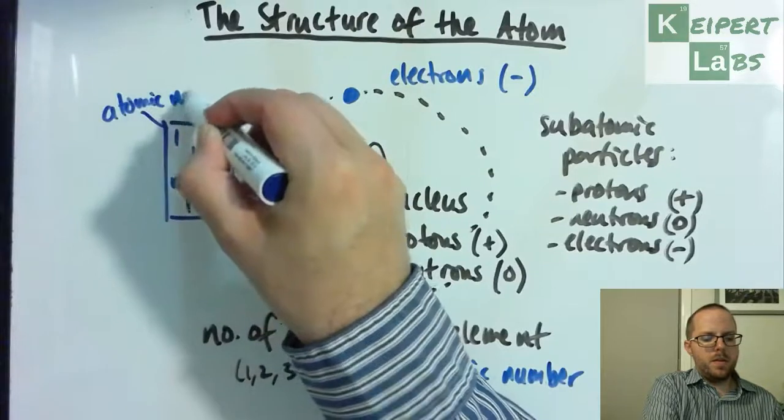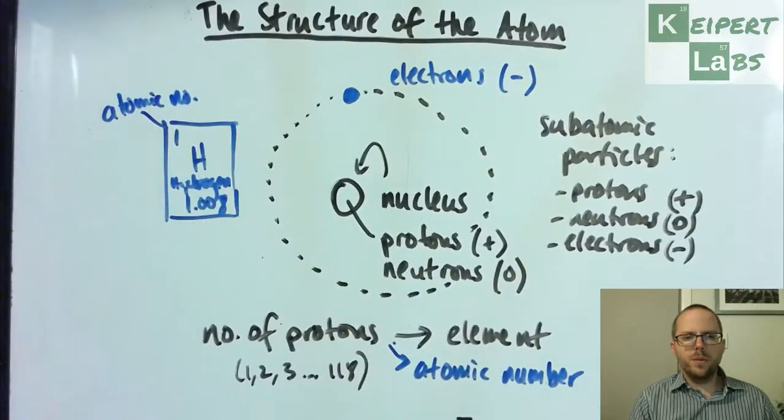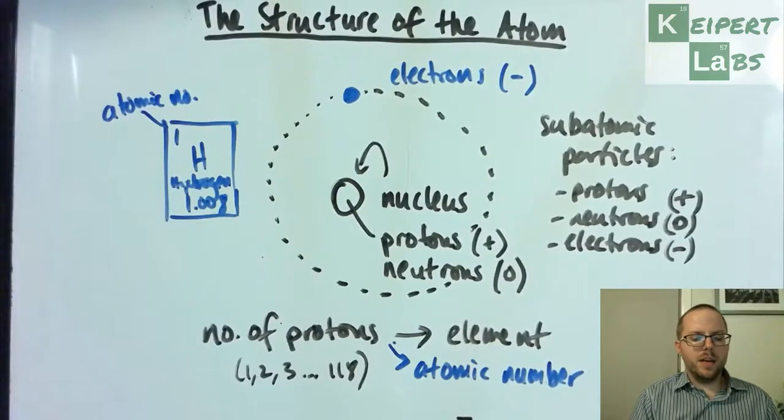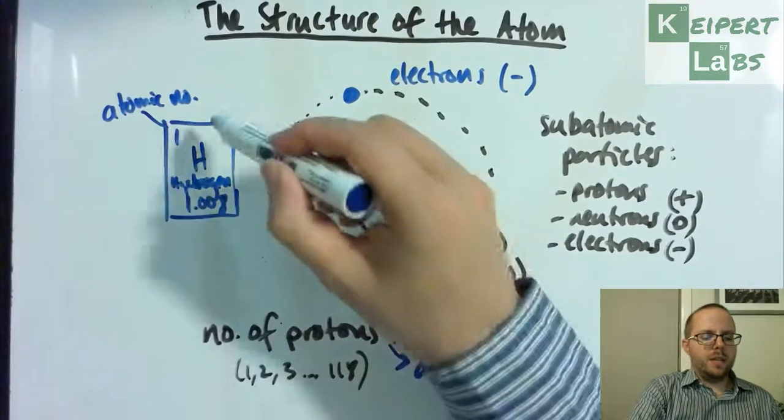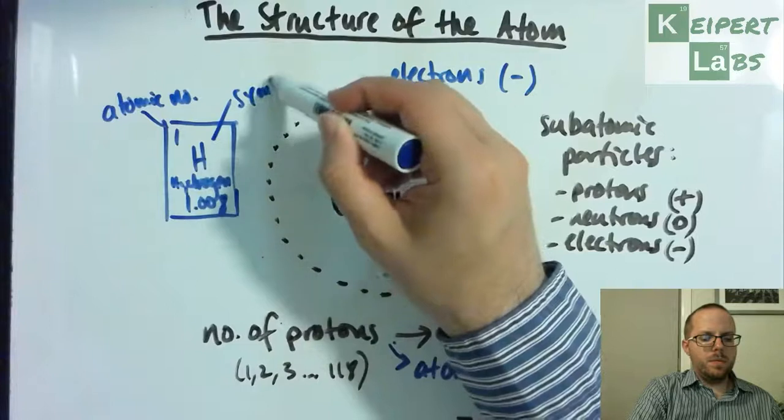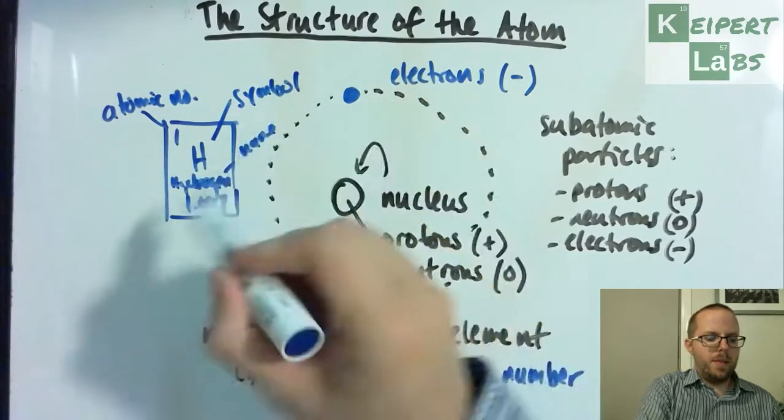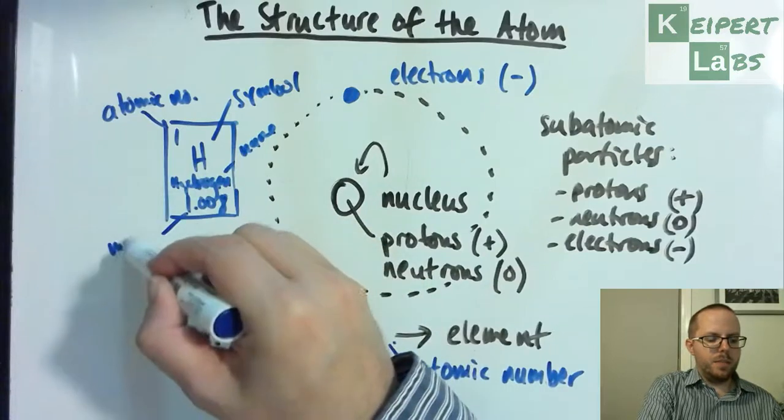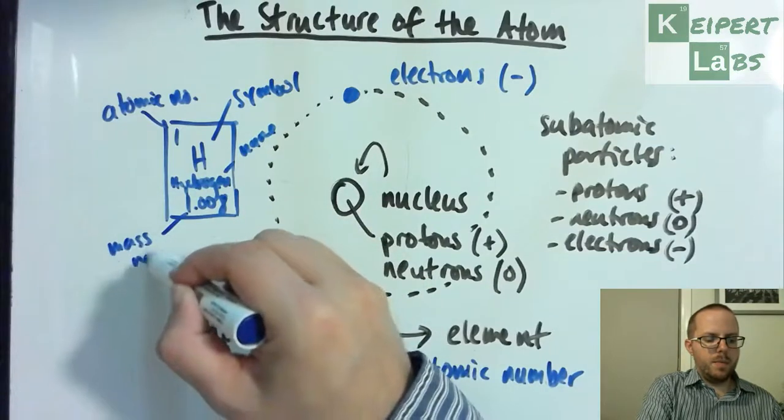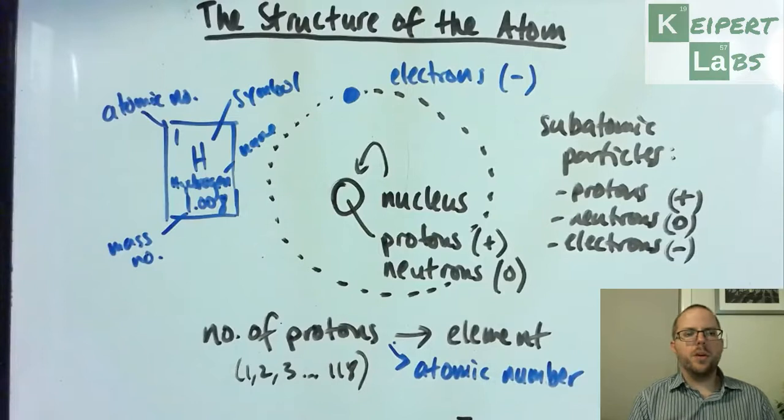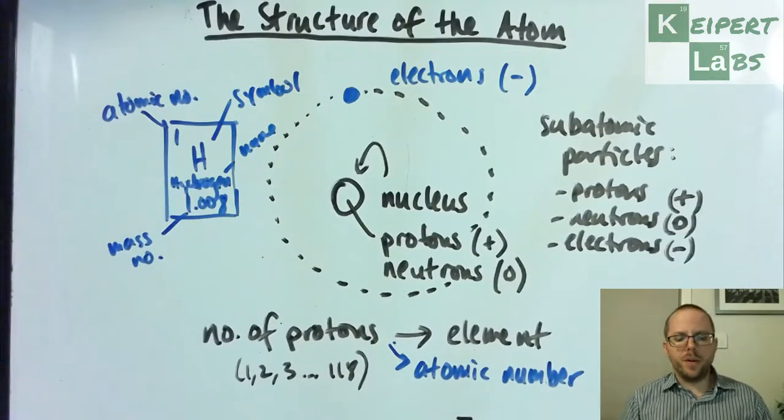But this number one up here is our atomic number. So it's the whole number that we're looking for that relates to how many protons there are. We can see our symbol, as I mentioned, we can see the name, and then what we have down here is called its mass number. We'll go over atomic and mass number in a future video.